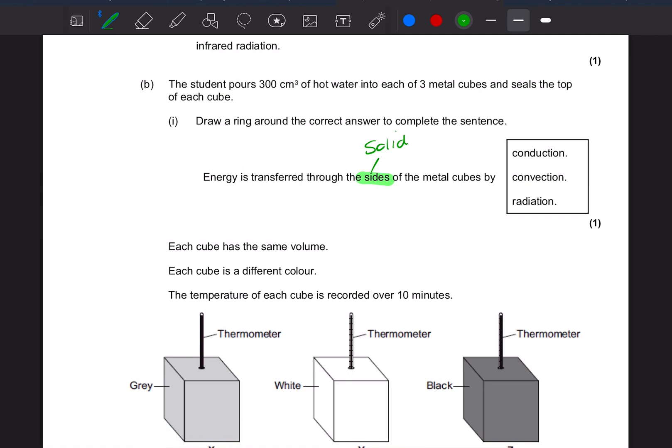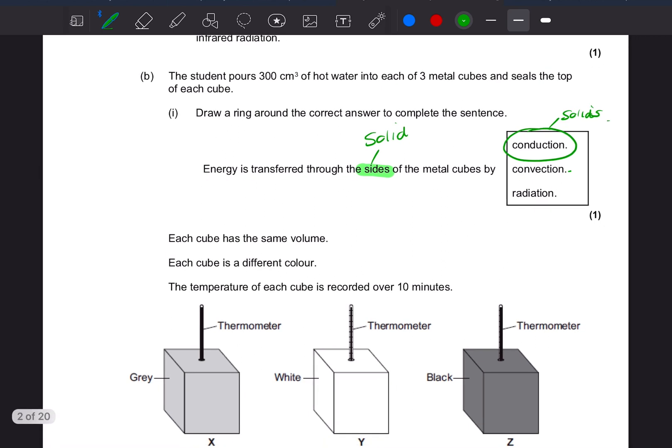And that is through conduction. So conduction is in solids, remember convection is in fluids, liquids and gases, and then radiation is a transfer as a wave and that can travel through a vacuum.